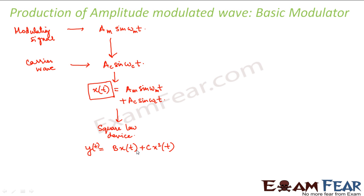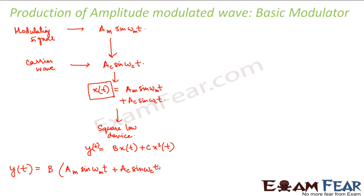The output depends not only on the input linearly, but also on the square of the input, where b and c are constants. This is how the amplitude modulated wave is produced. We have assumed that x(t), the input, is the simple combination of the modulating signal and the carrier wave. So the output y(t) = b·[AM sin(ωm·t) + AC sin(ωc·t)] + c·[AM sin(ωm·t) + AC sin(ωc·t)]².